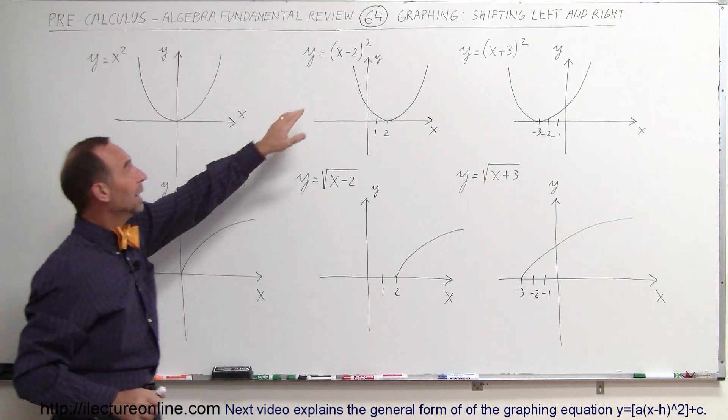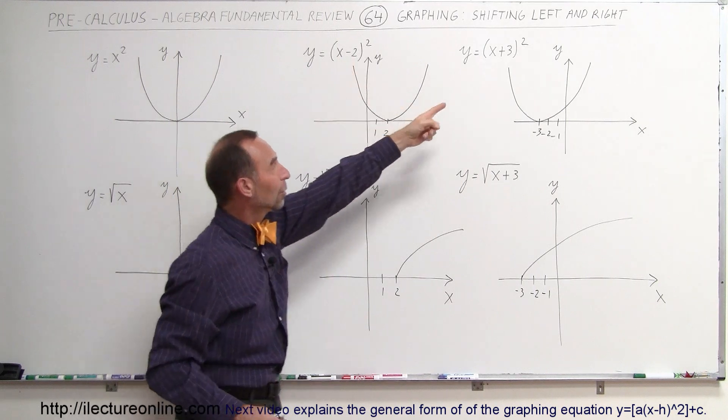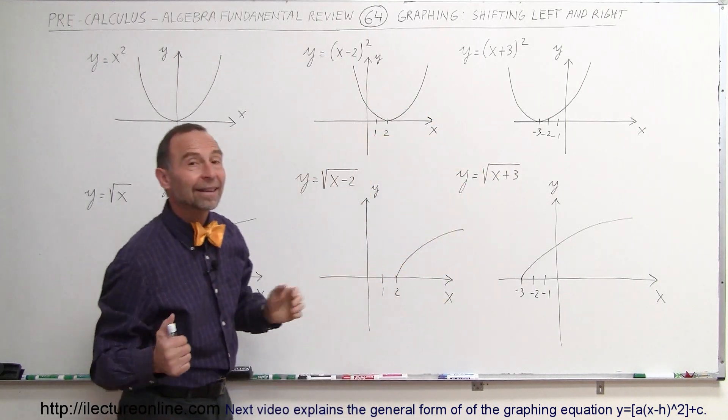So simply, when we write inside the quantity, minus 2, it shifted to the right, plus 3, like over there, it shifted to the left, and that's how that works.